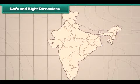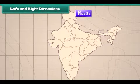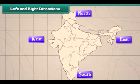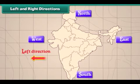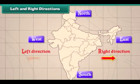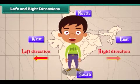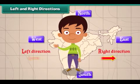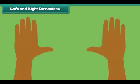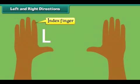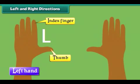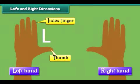In addition to north, south, east, and west, we also use left and right directions to locate a place. We use our hands to indicate the left and right directions. The hand that makes the letter L when the index finger and thumb are stretched out is our left hand, and the other one is our right hand.